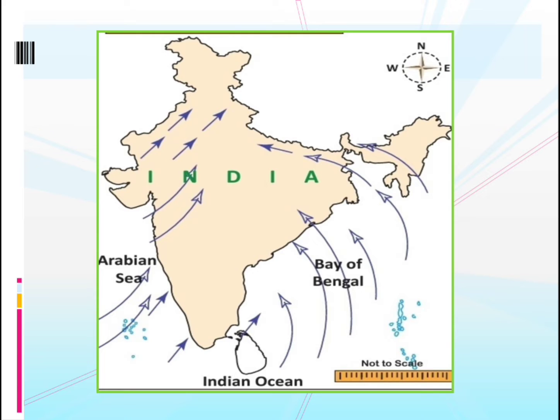So how does this happen? This happens during the summer. During summer, the air above the land becomes hot faster when compared to the air above the sea.